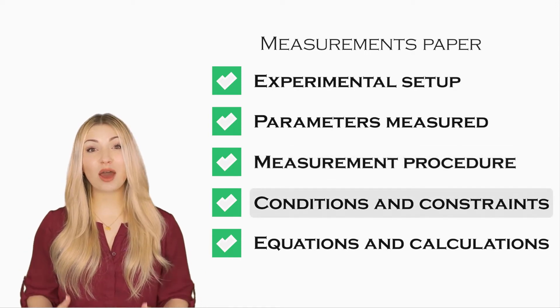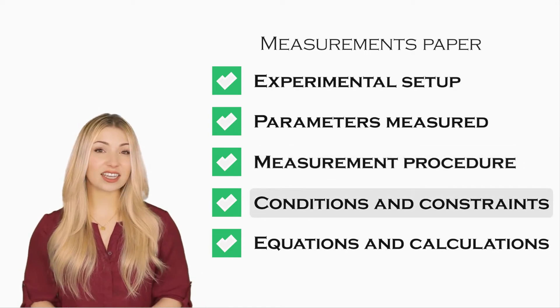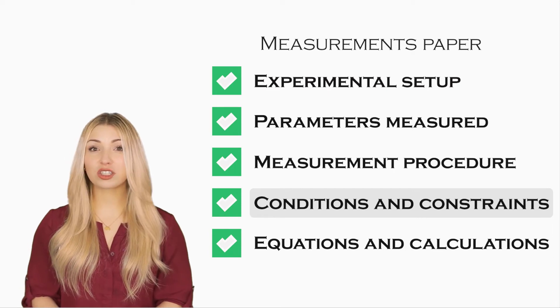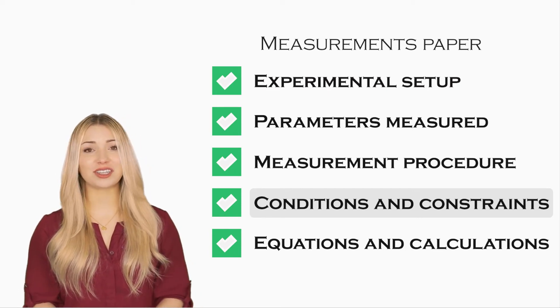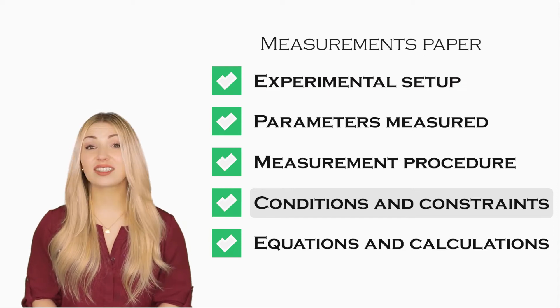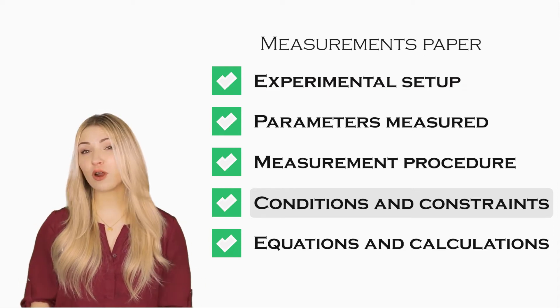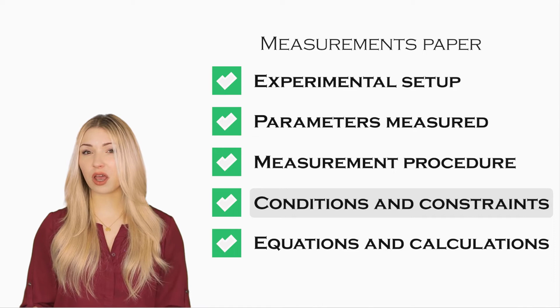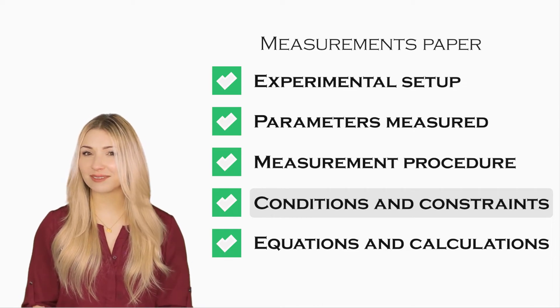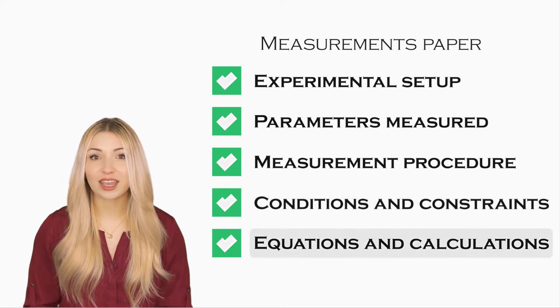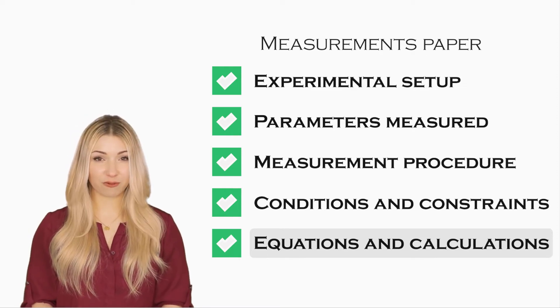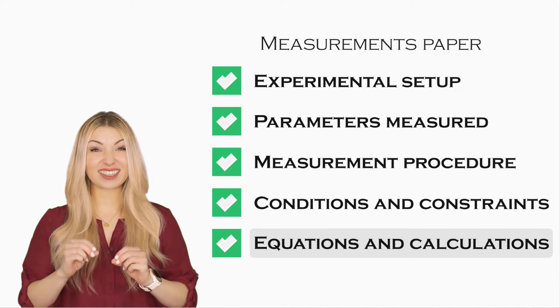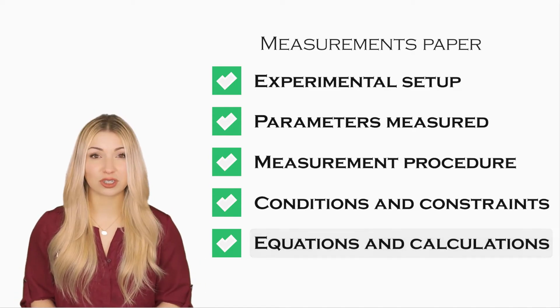Then you can talk about measurement conditions and constraints. Were the measurements performed in room temperature or under special conditions? Were there any practical difficulties while performing the measurements? If so, how did you overcome it? Most importantly, you must list all the calculations in the form of detailed equations and formulas so that readers know exactly how the data was produced.